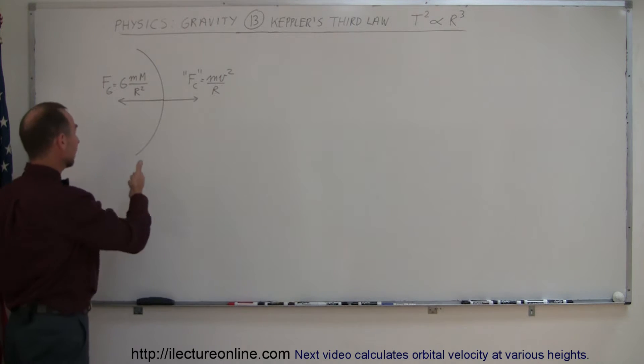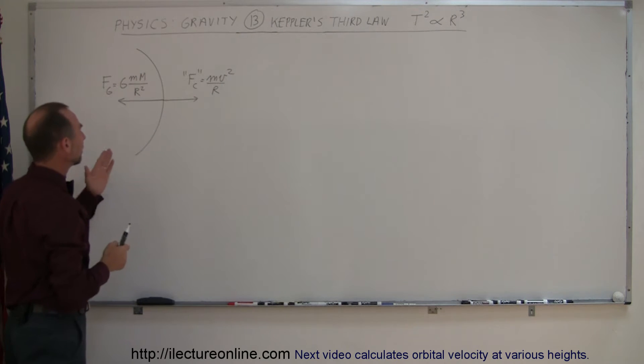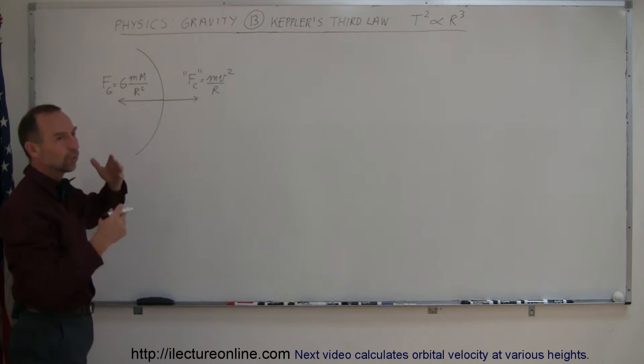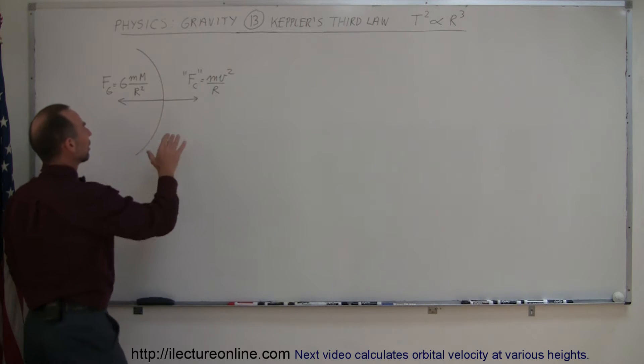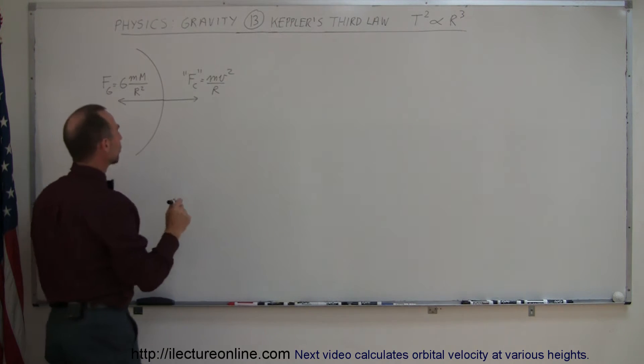So first of all, an orbit of a planet is nearly circular, so at any point in time we can say that the force of attraction towards the sun is equal to the centripetal force, and so we can say it's equal to the centrifugal force pushing it to the other side. So if we set those two equal to each other...